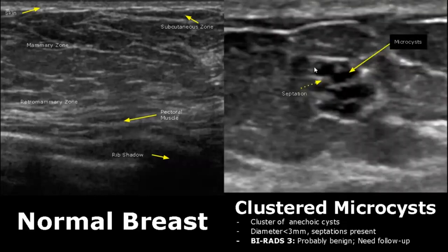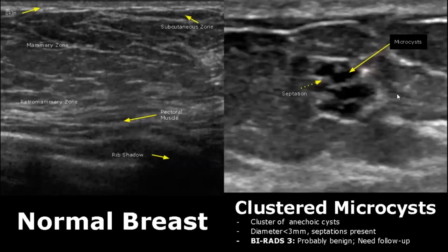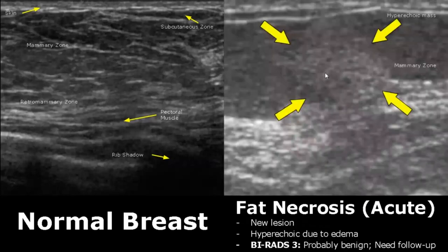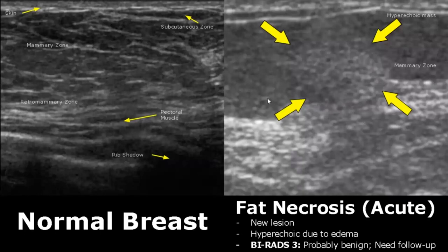Clustered microcysts will have a group of cysts clustered together with diameter less than 3 mm, and septations may be present. It is rated BIRADS 3 because follow-up is required. Fat necrosis has a variety of appearances. In the acute phase, the lesion is new and may appear as a hyperechoic lesion due to edema. Fat necrosis appearances overlap with malignant lesions, so a follow-up is required, making it rated as BIRADS 3.